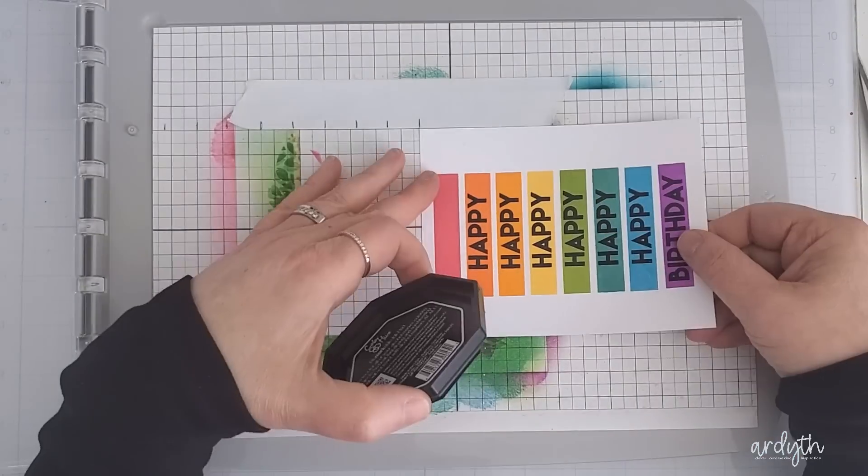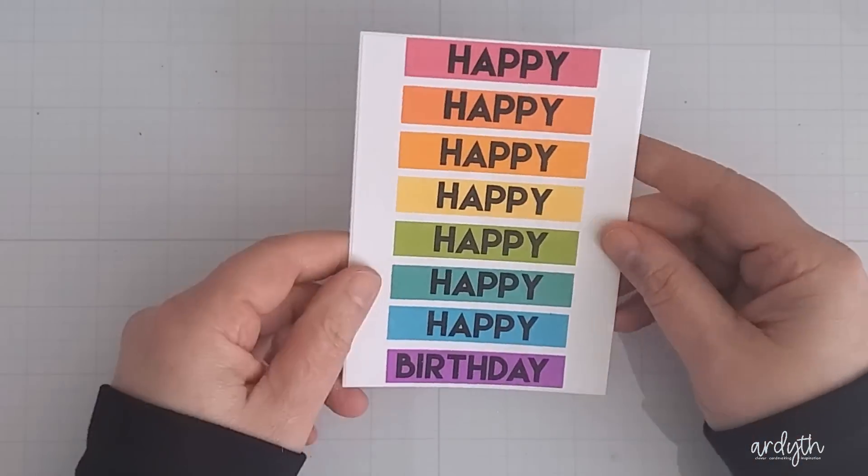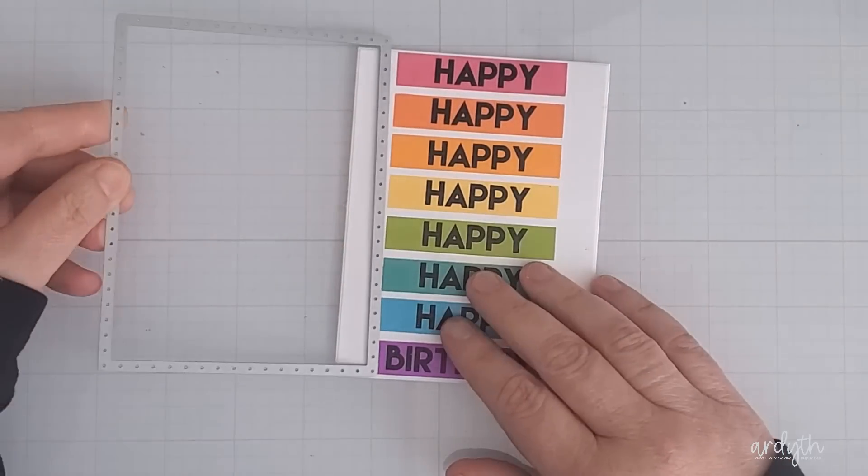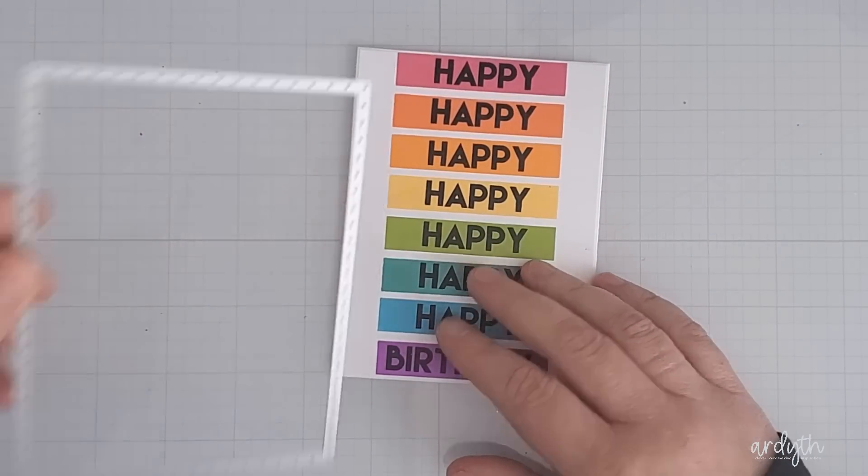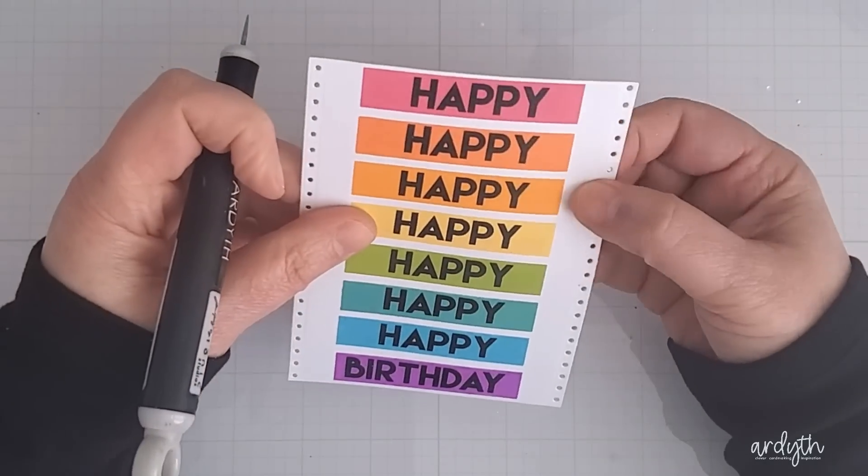And that's kind of fun but I wanted to add some interest to this panel. So after cutting down the panel with a rectangle die I grabbed the largest stitching rectangle die from Ellen Hutson. This has a long side that's longer than my rectangle panel and that means I can use it to create a line of stitching holes down each side.